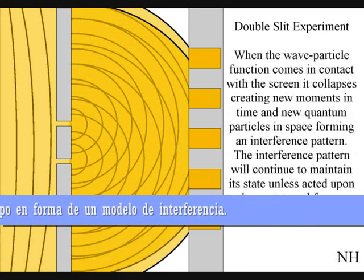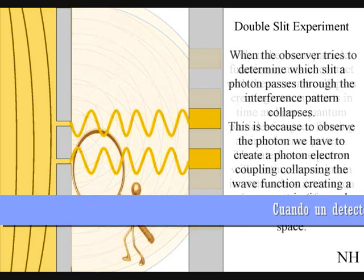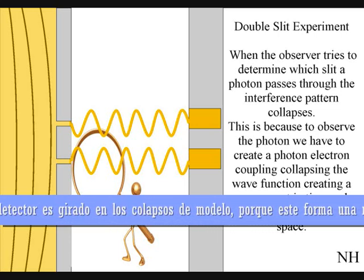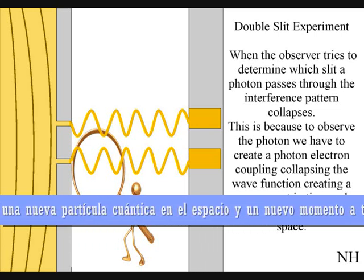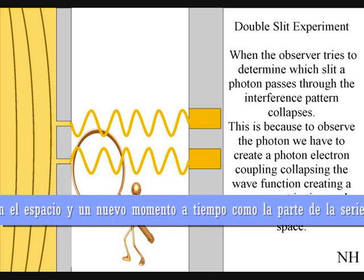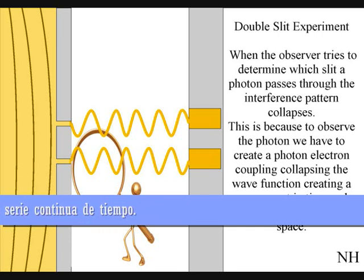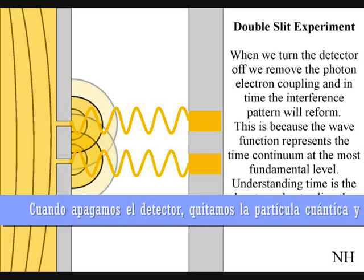When the observer turns on a detector to determine which slit a photon passes through, the interference pattern will collapse. This is because to observe the photon, we have to create a photon-electron coupling, collapsing each wave front into a new quantum particle that will have its own position in space and time. If we turn the detector off, we remove the photon-electron coupling, and in time, the interference pattern will reform.